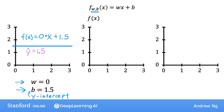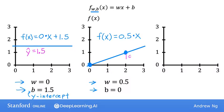As a second example, if w is 0.5 and b is equal to 0, then f of x is 0.5 times x. When x is 0, the prediction is also 0. And when x is 2, then the prediction is 0.5 times 2, which is 1. So you get a line that looks like this, and notice that the slope is 0.5 divided by 1. So the value of w gives you the slope of the line, which is 0.5.